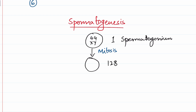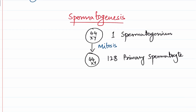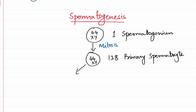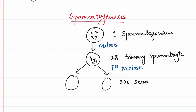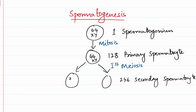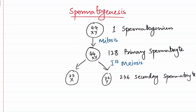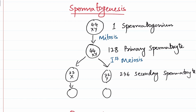Each spermatogonium will undergo repeated cycles of mitosis to produce 128 primary spermatocytes, which will have a karyotype of 44XY because in mitosis there is no chromosomal separation. These primary spermatocytes will then undergo the first meiotic division, and in meiosis there will be chromosomal separation. We will end up with 256 secondary spermatocytes having 22X and 22Y chromosomes. They will then undergo meiosis II, giving rise to 512 spermatids.